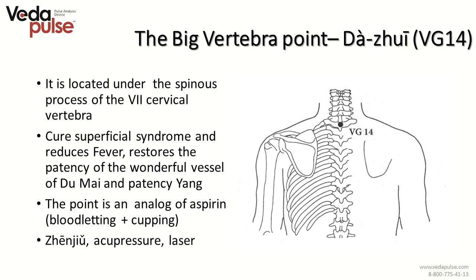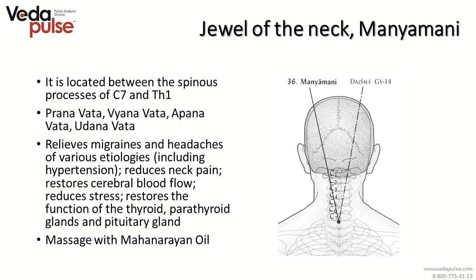Dazhui (GV-14) or the big vertebra point is located under the spinous process of the seventh cervical vertebra; it cures superficial syndrome, reduces fever, restores patency of the Du Mai vessel and patency of Yang — it acts as an analog of aspirin and can be influenced by Zhenjiu therapy, acupressure, or laser. Its Ayurvedic analog is Manyamani marma — the jewel of the neck point — which influences Pranavata, Vyanavata, Panavata, and Udhanavata; it relieves migraines and headaches, reduces neck pain, restores cerebral blood flow, reduces stress, restores function of thyroid, parathyroid glands, and pituitary gland. It can be massaged with Mahanarayan oil.